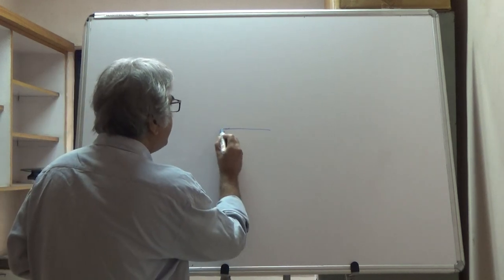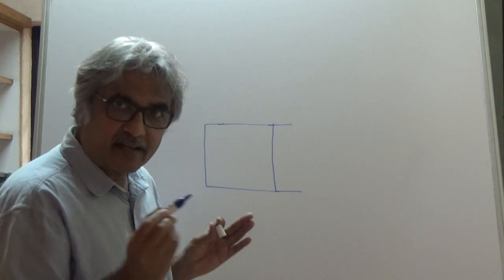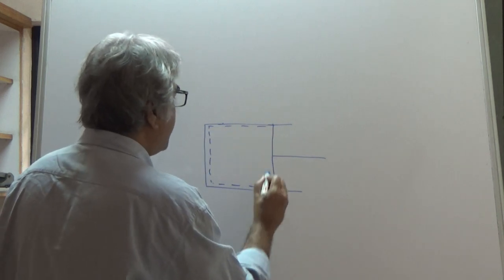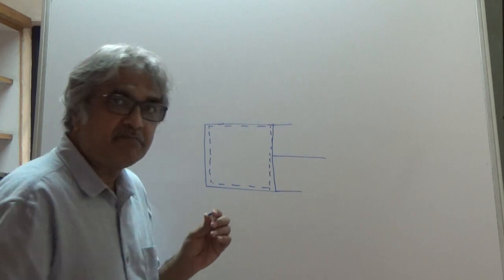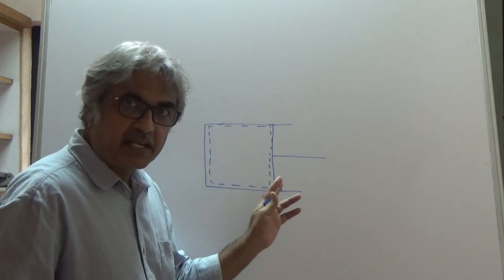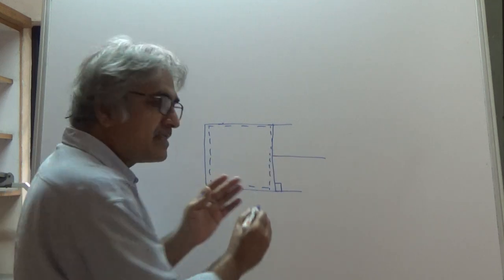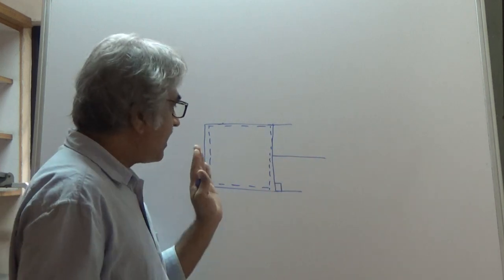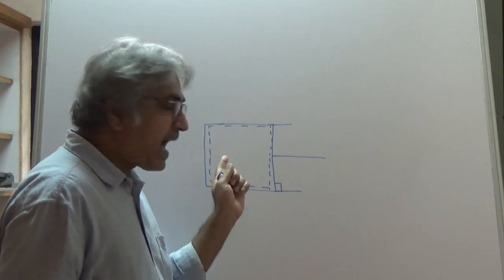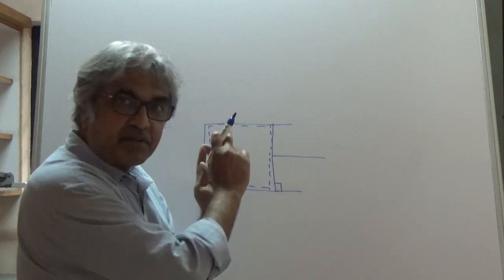Suppose we have a piston-cylinder arrangement. By a dotted line I am showing the system boundary. There is a fluid inside — let us say it is a gas — and I have placed a stopper here. The fluid inside has a higher pressure than the surrounding pressure. Right now the piston is not able to move towards the right, meaning the gas cannot expand because there is this stopper.